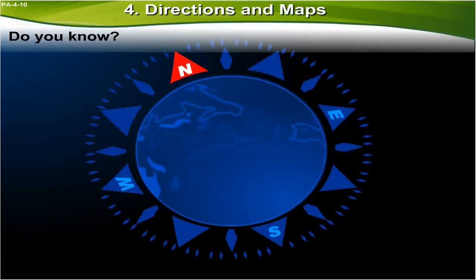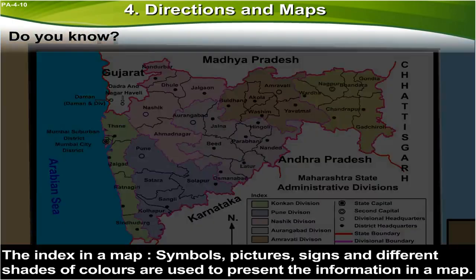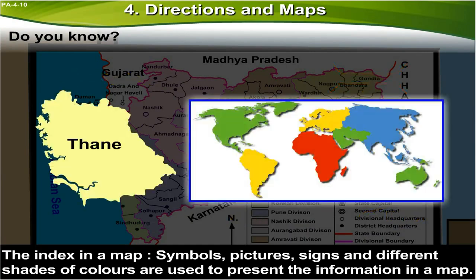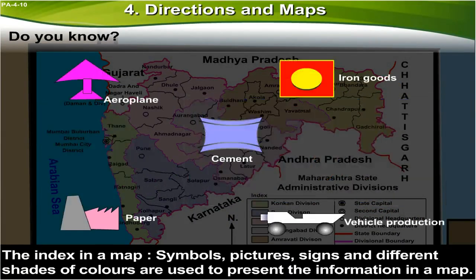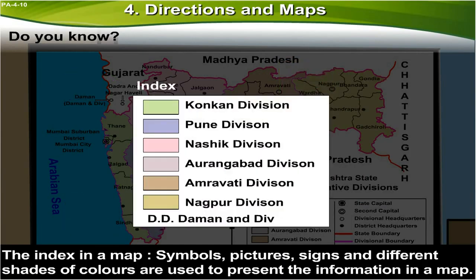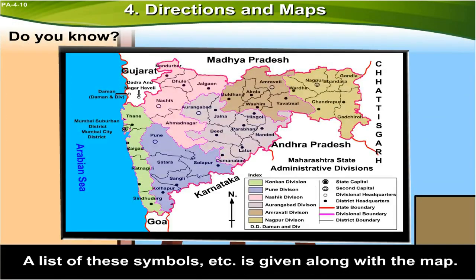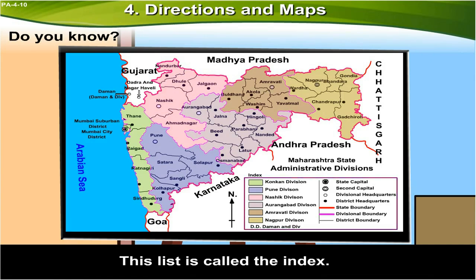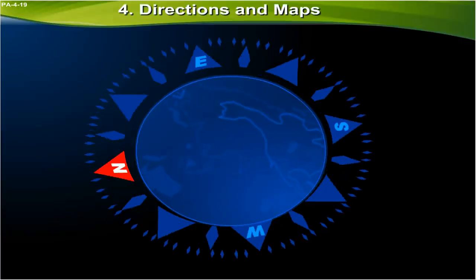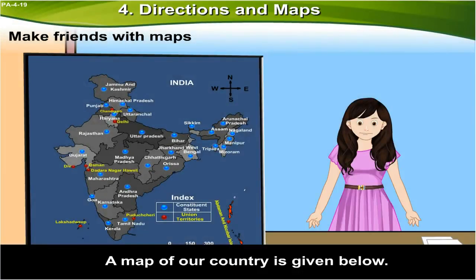Do you know? The index in a map uses symbols, pictures, signs, and different shades of colors to present information. A list of these symbols is given along the map. This list is called the index. The index helps us to understand the map.